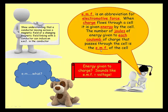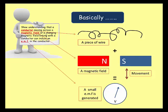Let's think about a moving conductor through a field and what components we need. We need a conductor — any piece of wire will do as long as it's a conductor. We need a magnetic field — here we've got a north pole and south pole. And we need movement — the movement of the wire in the magnetic field. If we have all that, we will find we get a small EMF or voltage being generated.